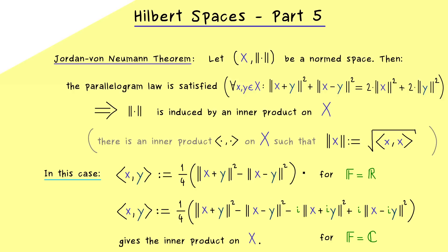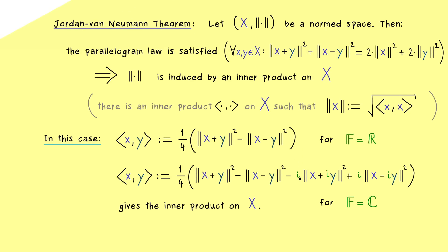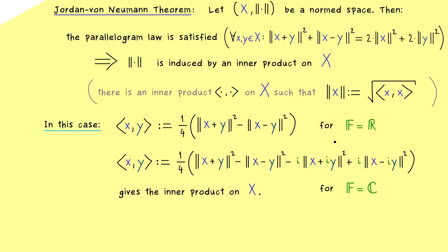So this is the whole Jordan von Neumann theorem and today we will try to prove it. And for that it's really helpful that we already know how we should define the inner products in the real case and in the complex case. There please recall, the polarization identity tells us that this is the only possibility for such an inner product. However, we still have to show that this actually defines an inner product in our case. In other words, it will turn out that the parallelogram law gives us all the properties of an inner product.